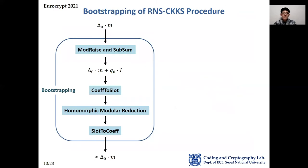There are four main sub-processes in RNS-CKKS bootstrapping: mod-raise and sub-sum, coefficients-to-slots, homomorphic modular reduction, and slots-to-coefficients. Since the main obstacle for bootstrapping precision is the homomorphic modular reduction, we focus on that step in this paper.